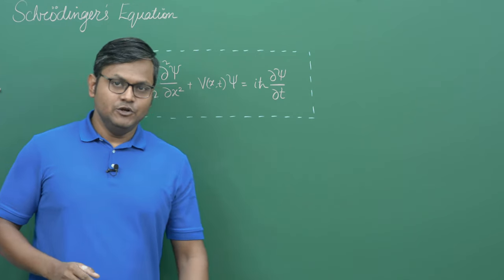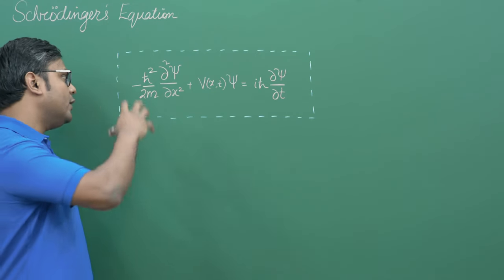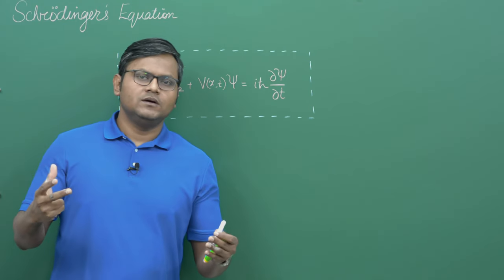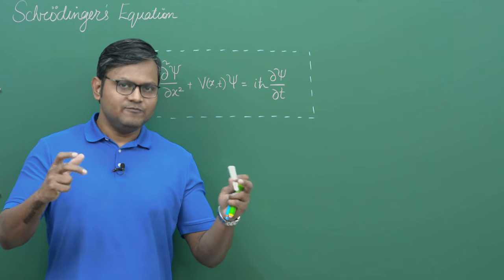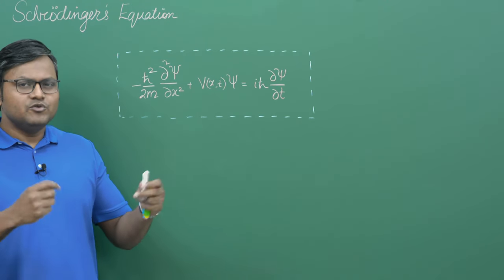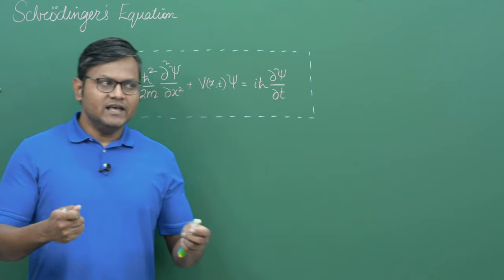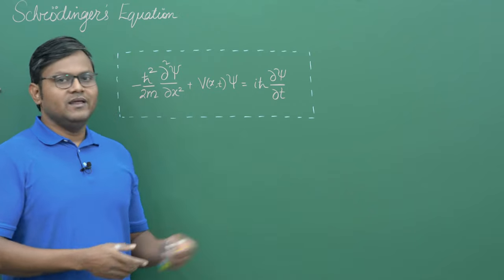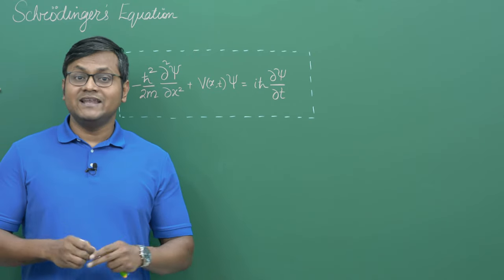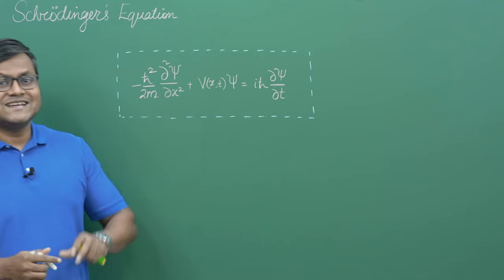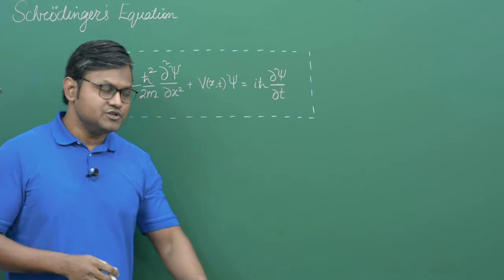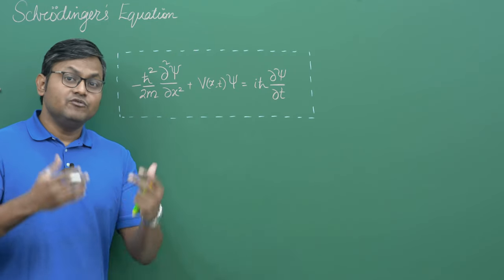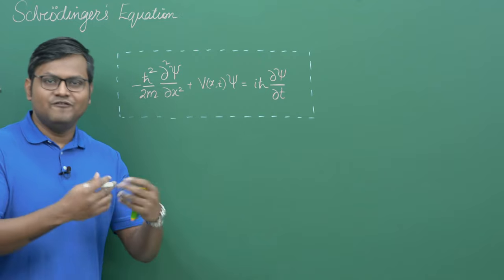So what are we going to do in today's video? First, we are going to try to understand this equation. Second, I'm going to try to come up with a derivation — or rather, a set of arguments — that we can use to arrive at this equation. And third, I'm going to introduce to you the time-independent Schrödinger's equation. What we have right here is the time-dependent form, and we can reduce it further to its time-independent form.